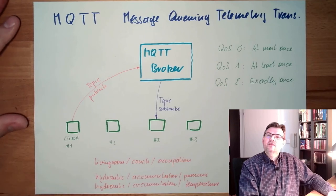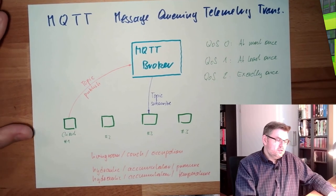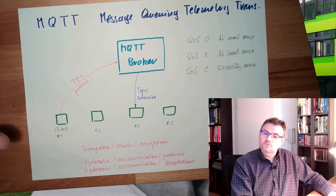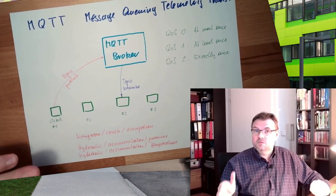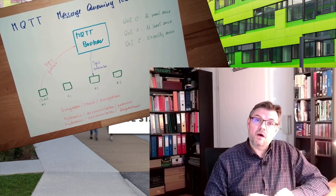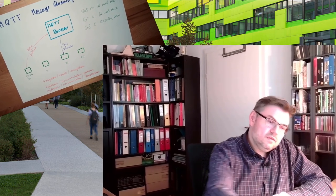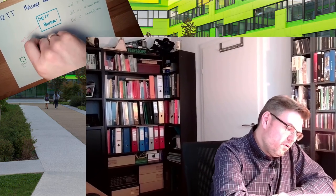Message Queuing Telemetry Transport — this is the first thing we are going to use. We are going to use an MQTT broker, specifically Mosquitto on a Raspberry Pi. There is a video about how this is set up. We will use our device here to communicate with the broker, and the next video will show how to publish and subscribe with it.